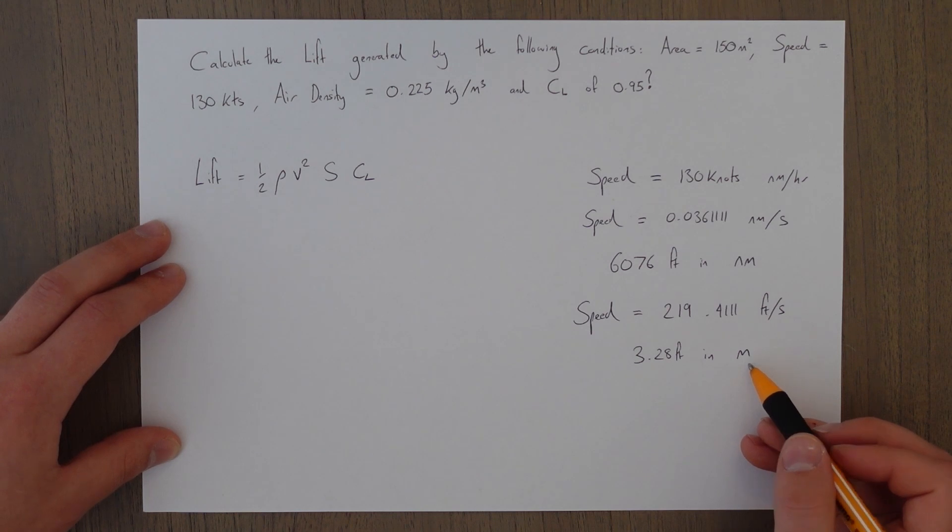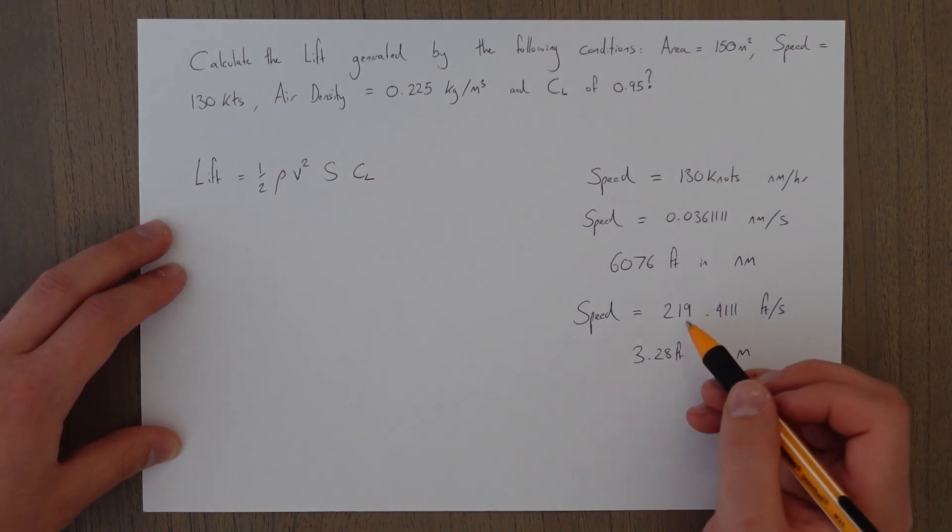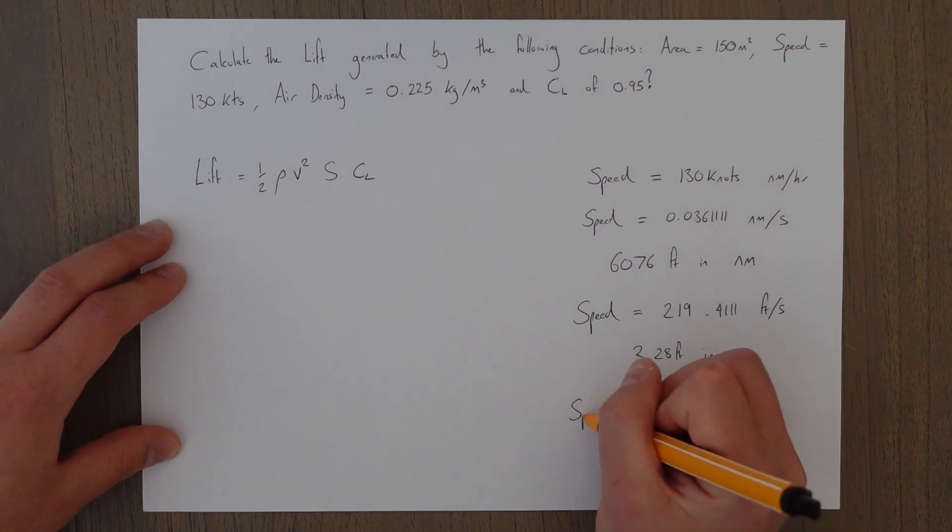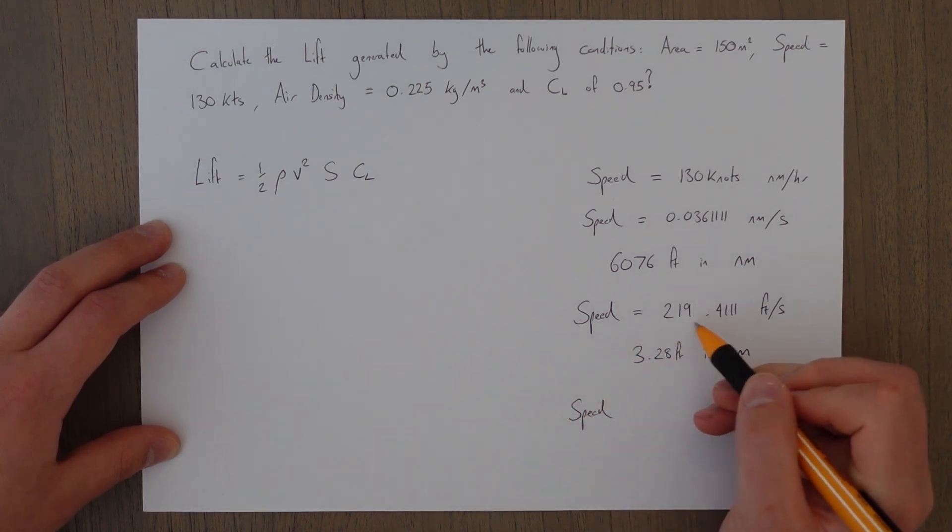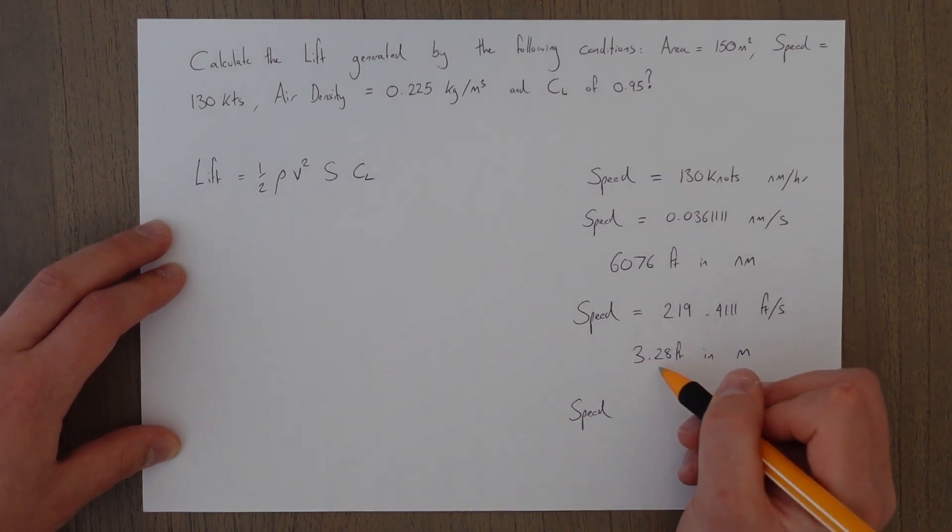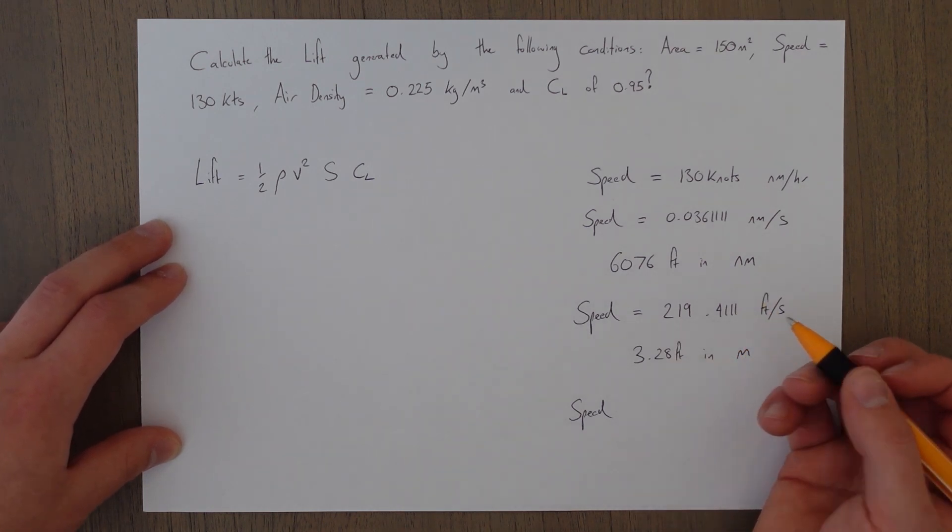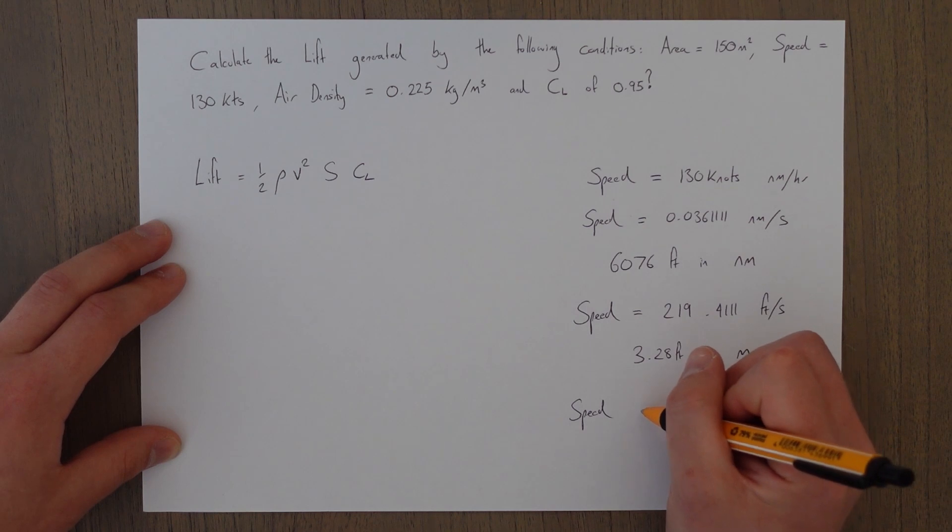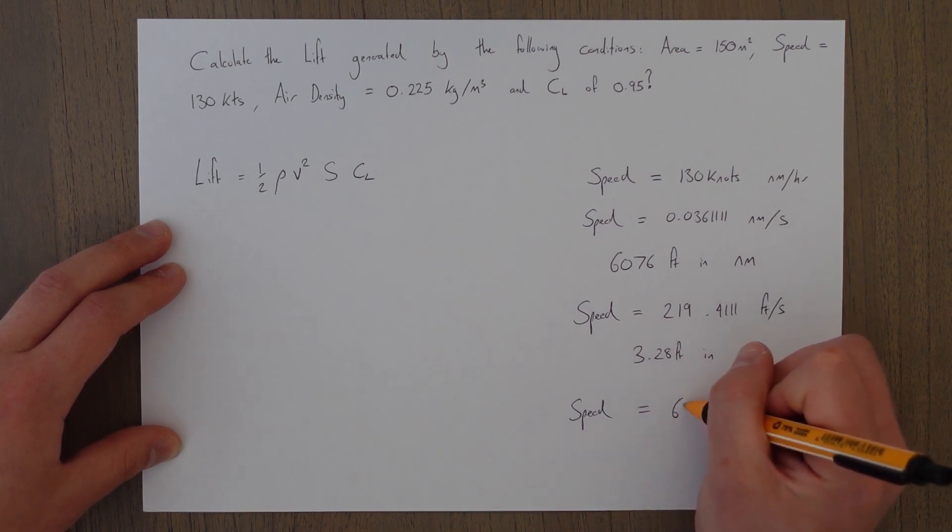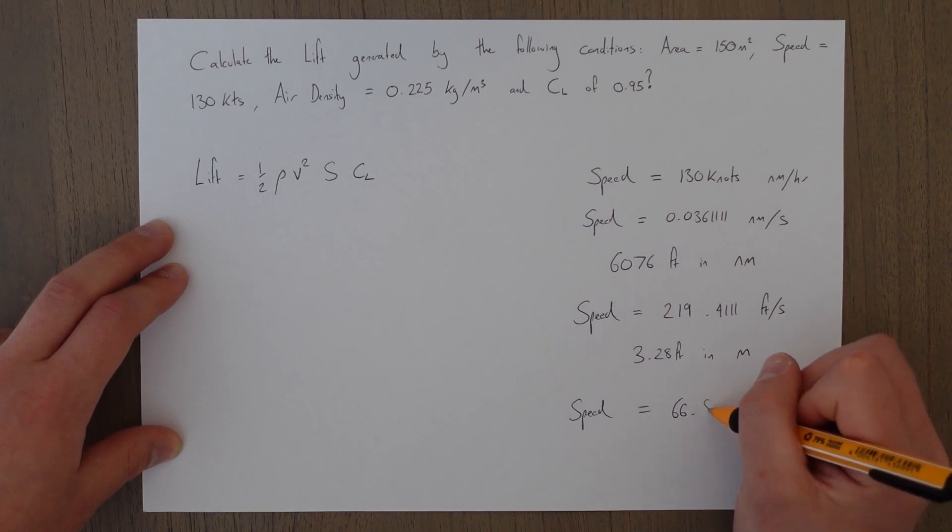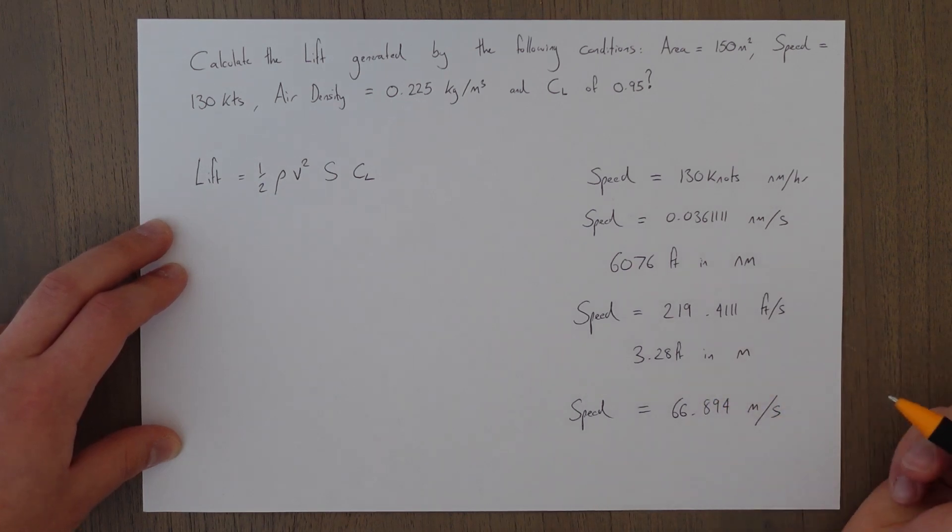Meters are longer so there's going to be fewer of them in this distance. So the speed would equal 219.411 divided by 3.28, which gives us an answer of 66.894 meters covered every second.